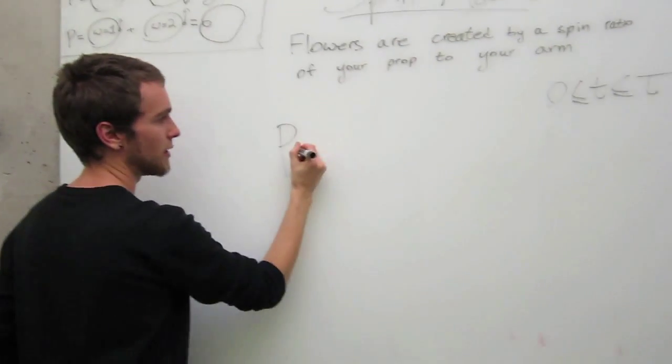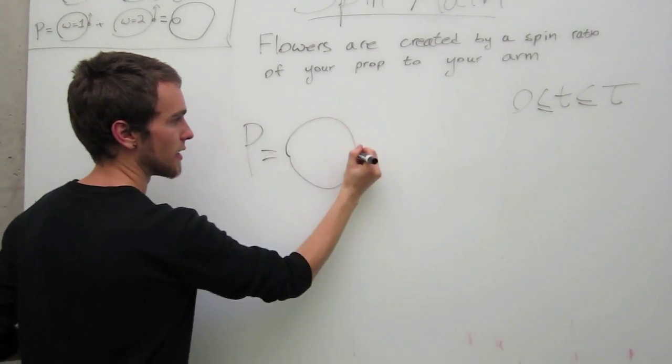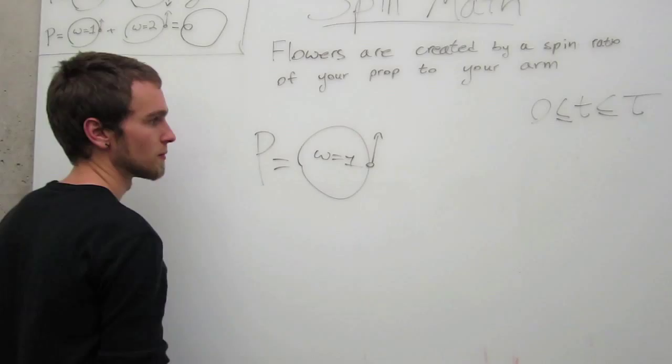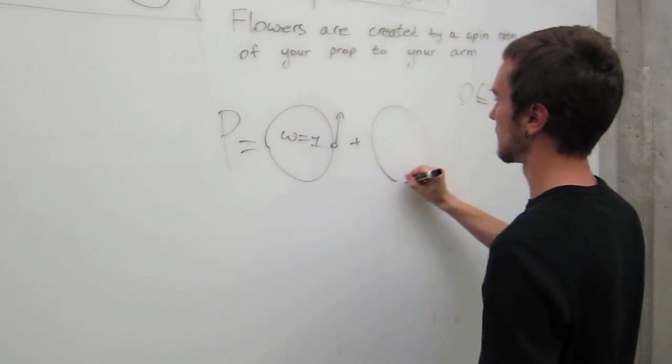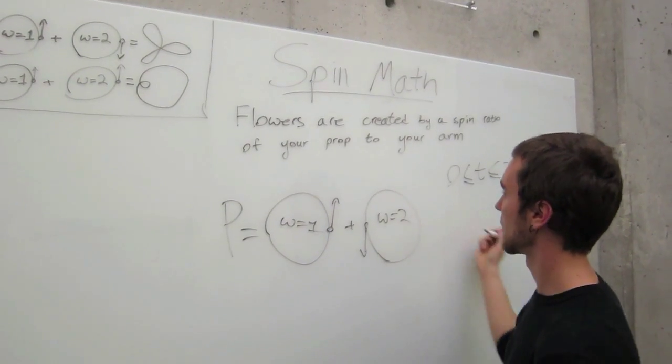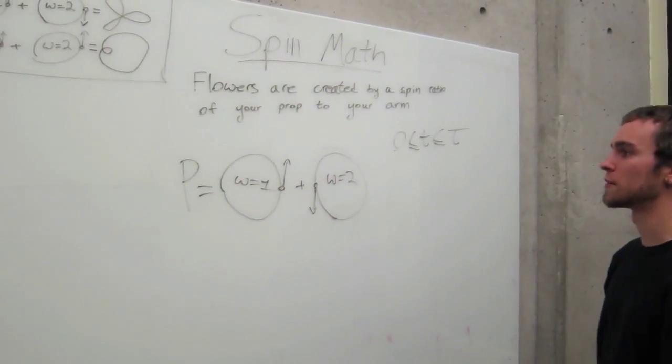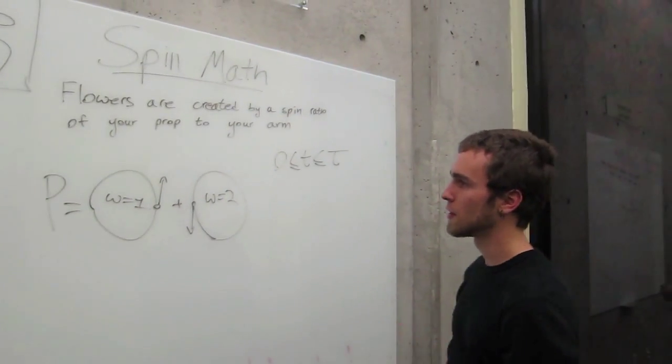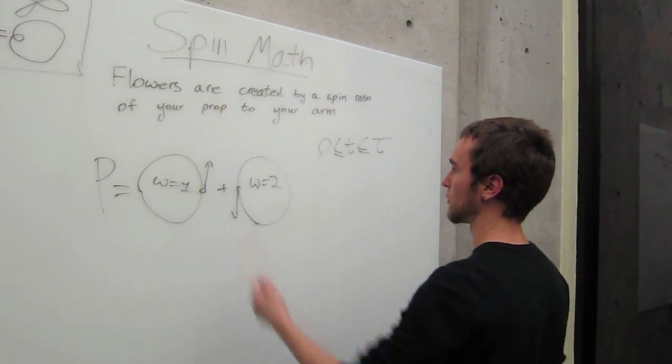So we're going to say p, which the pattern equals, let's start in there, omega equal one, plus let's start this one there, omega equal two. So right here this is the pattern. We can figure out what pattern that is. The starting circle for the prop is pointed to the left. The starting circle for the arm is pointed to the right.